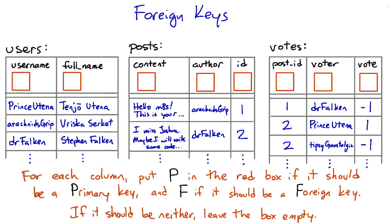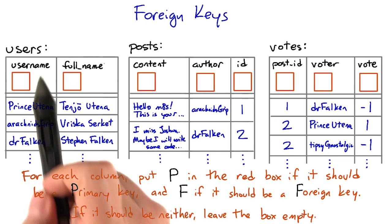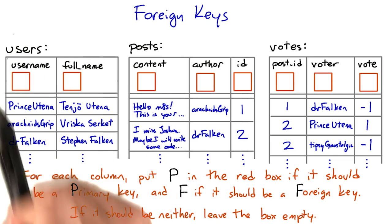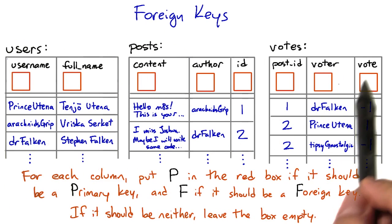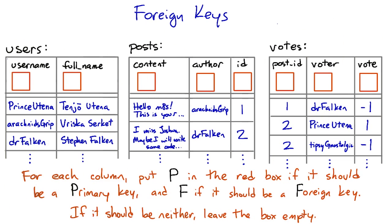Now here's a quiz. These tables are for a more complex forum app than the one you worked on last lesson. This app allows users to log in, post comments, and also vote on other people's posts. Take a look at these tables and see if you can figure out which columns should be primary keys, and which columns should be foreign keys referencing them.